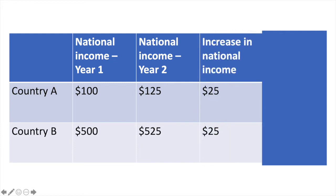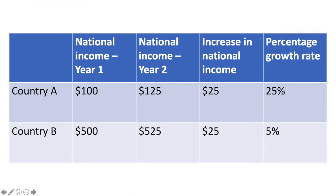Both economies have increased in size by $25. However, as a percentage of their original state in year 1, country A's growth rate is much higher at 25%. Country B's economy is already large and thus the $25 increase only results in a 5% increase. Of course, there are many factors to consider beyond national income to determine what is happening in these economies, but it gives us a good starting point.